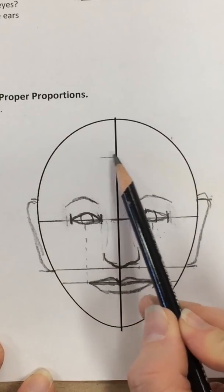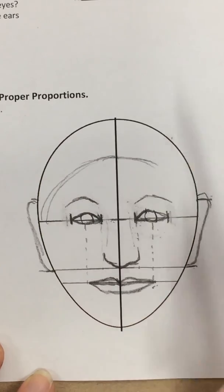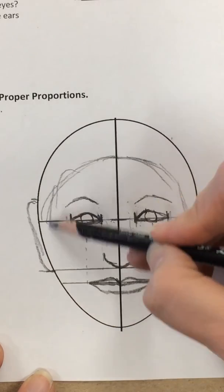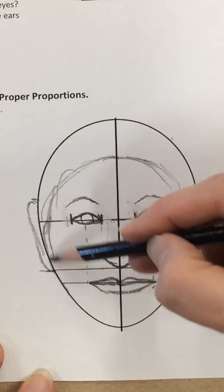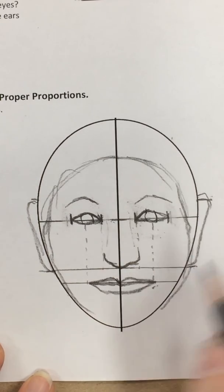The forehead and hairline would be up like this. Of course, you could reshape the face to make it look more like the person, but these are the basic arrangements.